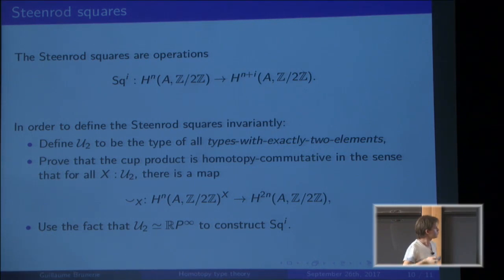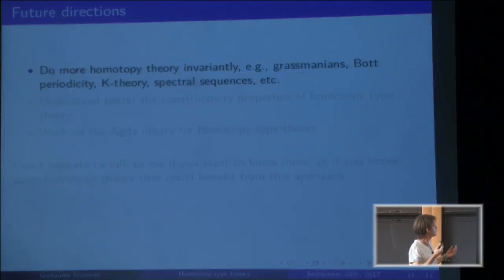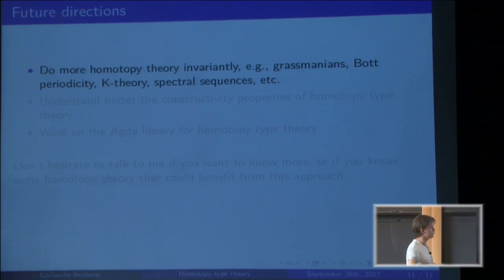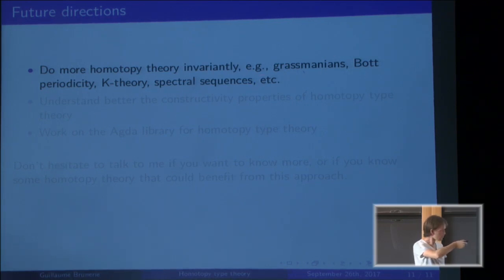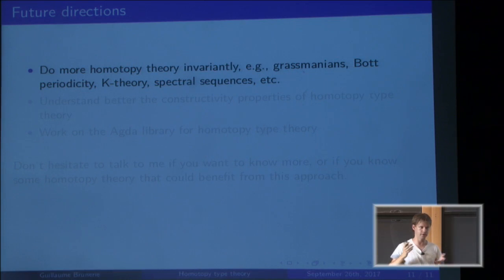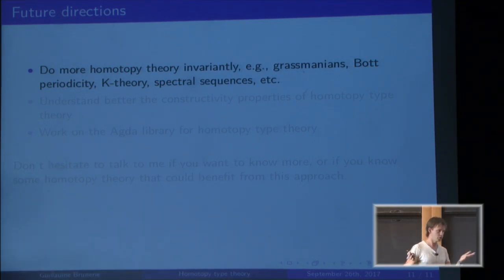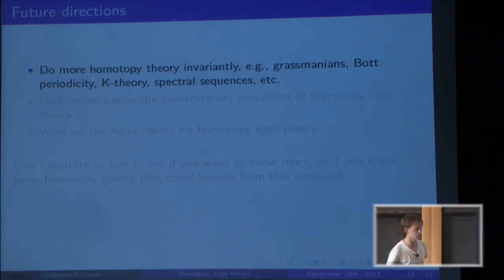This year I would like to continue with invariant homotopy theory and try to do more things, for instance defining Grassmannians and proving Bott periodicity, K-theory, and spectral sequences. We still don't know how to do all of that, but it looks like it should not be too difficult.